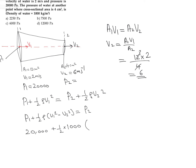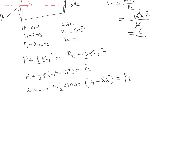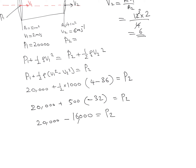Now substituting: V1 squared is 2 squared equals 4, and V2 squared is 6 squared equals 36. So P2 equals 20,000 plus half times 1000 times (4 minus 36), which gives 20,000 plus 500 times (minus 32), equals 20,000 minus 16,000. Therefore, P2 equals 4,000 Pascal.